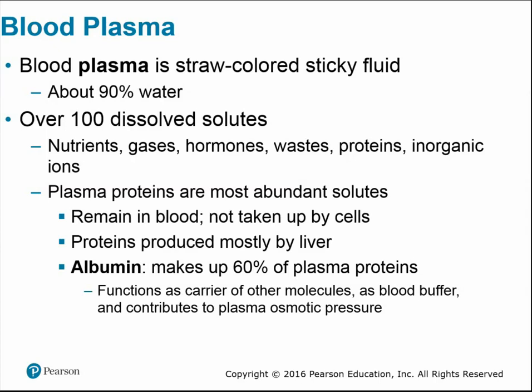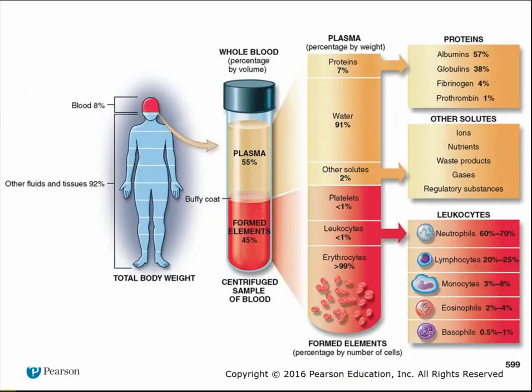Of all the plasma proteins, albumin is the most prevalent, making up roughly 60%. It functions as a carrier for other molecules, acts as a blood buffer, and contributes to plasma osmotic pressure. Overall, plasma is about 55% of blood volume, with roughly 90–91% being water and the remaining solutes including ions, nutrients, waste, gases, hormones, and proteins — with albumin being by far the most prevalent protein.